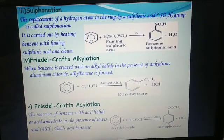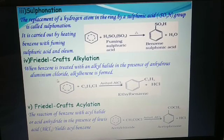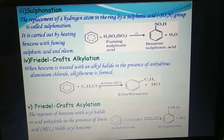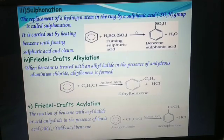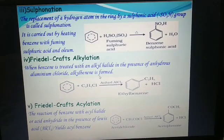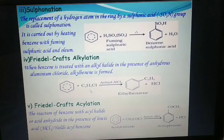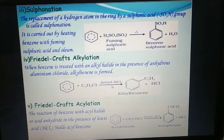Friedel-Crafts alkylation: when benzene is treated with an alkyl halide in the presence of anhydrous aluminum chloride, alkyl benzene is formed. With the help of this reaction, an alkyl group can be introduced in the benzene ring. For example, benzene reacts with ethyl chloride (C2H5Cl) in the presence of anhydrous AlCl3 to give ethyl benzene.